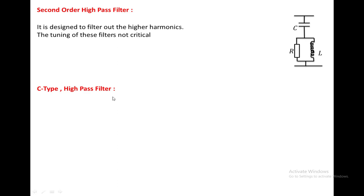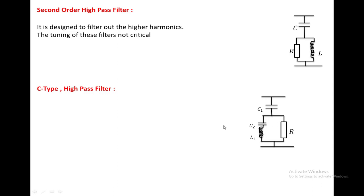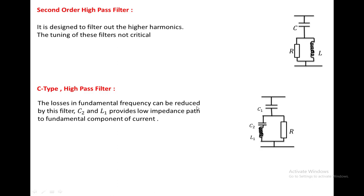The C type high pass filter circuit has a first capacitor C1 in series with the rest of the network. Inside, there is a second capacitor C2 and inductor L1 in series, and a resistor in parallel with that C2-L1 branch. The losses at fundamental frequency can be reduced by this filter. C2 and L1 provide a low impedance path to the fundamental component of the current.